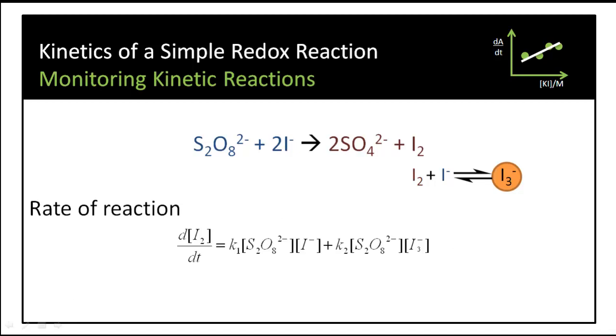This is the rate law of this reaction. Now at the start of the reaction, the concentration of triiodide will be much lower than that of the iodide, one of our reagents. So this second term in this expression is going to be much smaller. And we can simplify our rate law to just including the first term in this expression. This is only valid at the first minute or so of the reaction time.